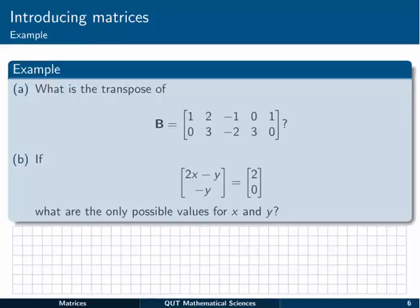So here's an example. First of all, we're asked what's the transpose of this matrix B. And then, if these two matrices are equal, what are the only possible values for x and y? Again, give yourself a moment to try this out for yourself before coming back and following through in the video.